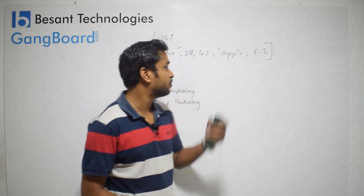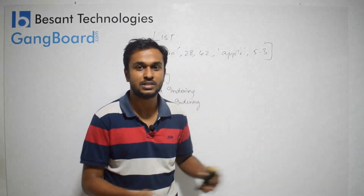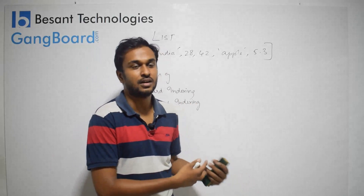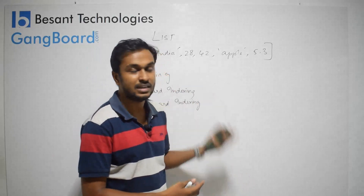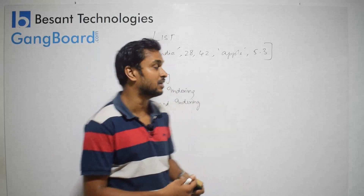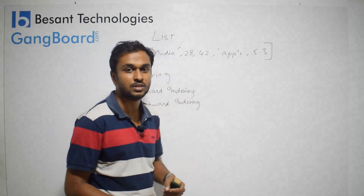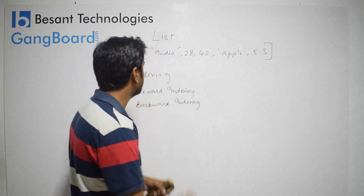I don't have to use multiple variables. With a single variable, I can define and store all the items in it. So when we have a collection of items, we go for a list.